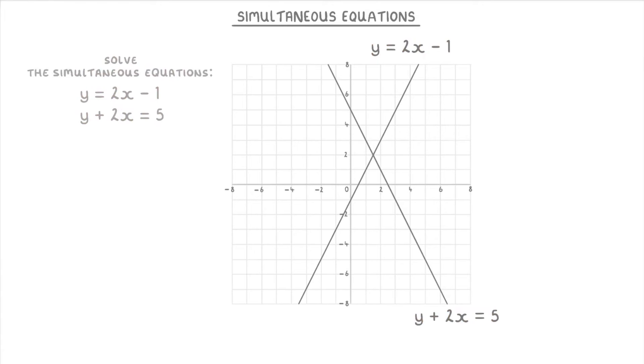So looking at our graph here, even though all of the points along this line are solutions for y equals 2x minus 1, and all of these points are solutions for y plus 2x equals 5, the only solution that's common to both of these lines is this one here where they cross, where x is 1.5 and y is 2.